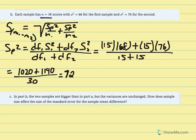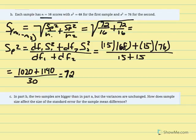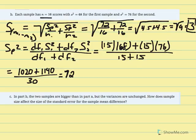Now calculating the estimated standard error of the mean difference using pooled variance of 72: 72 over 16 plus 72 over 16. Taking them as separate fractions, 72 divided by 16 equals 4.5 plus 4.5 equals the square root of 9, which equals 3. So given sample size increased to 16, the estimated standard error of the mean difference is now equal to 3.